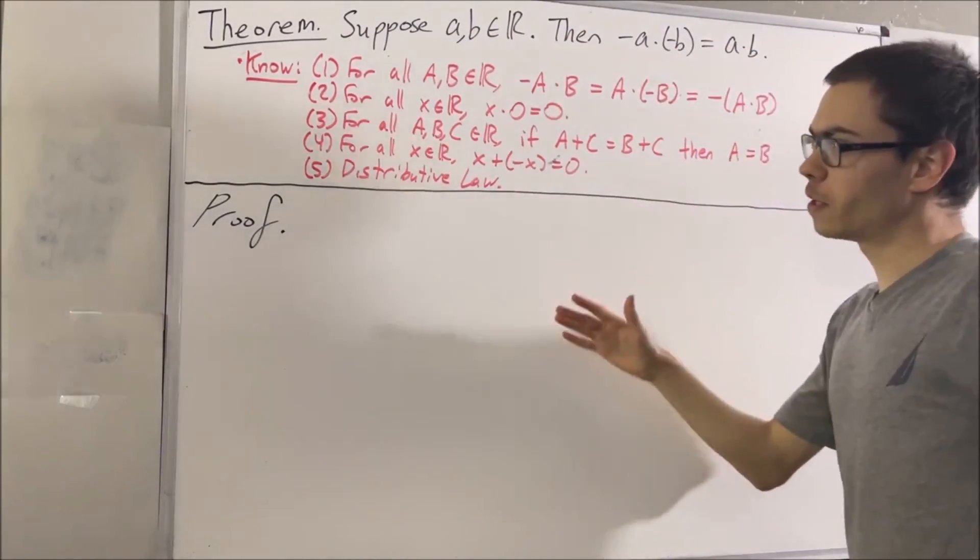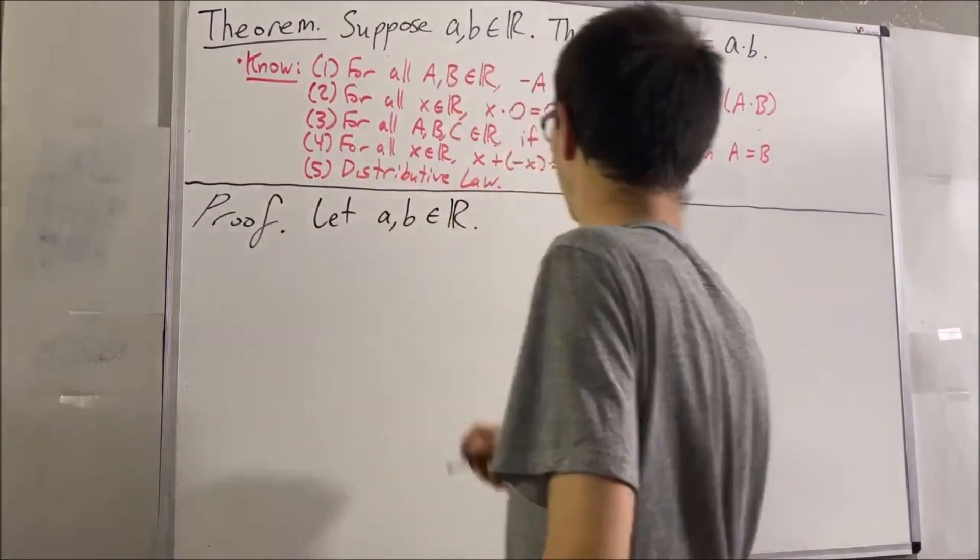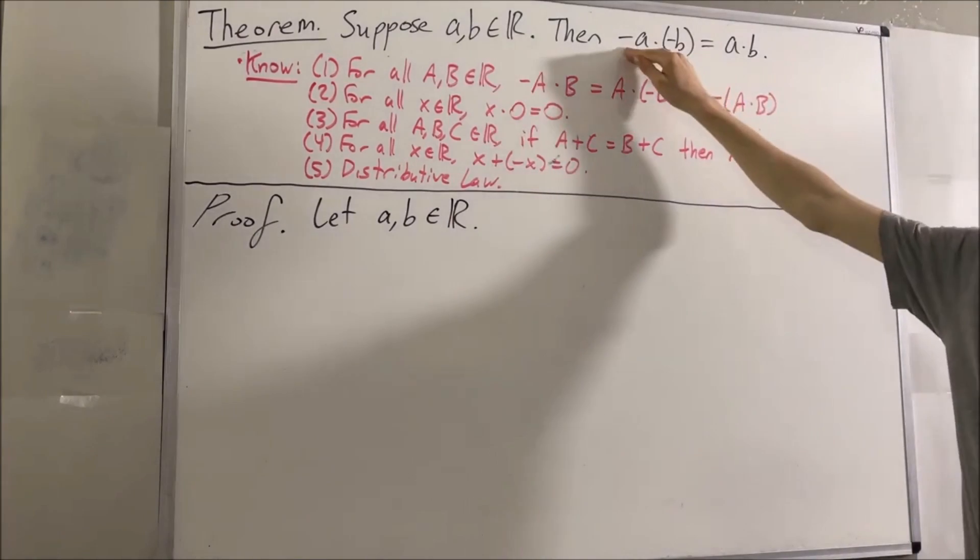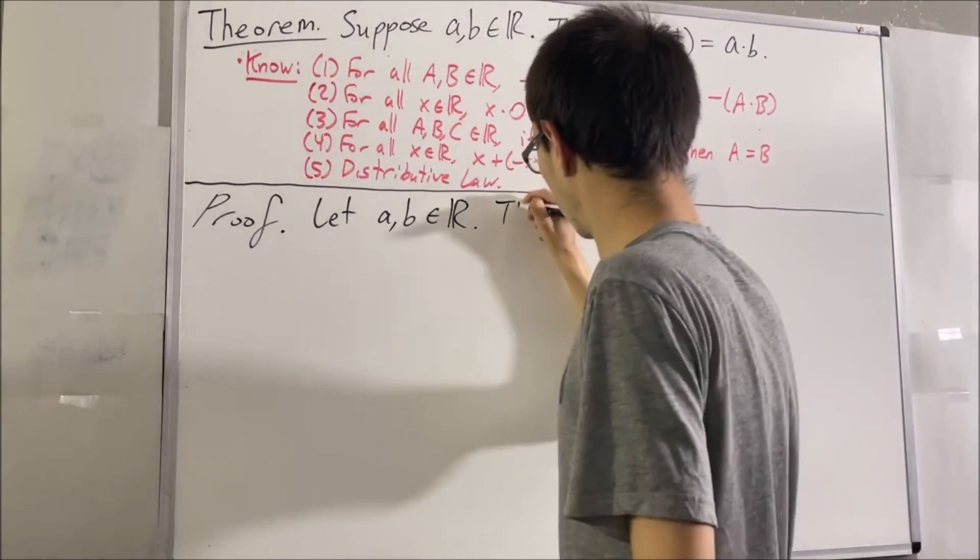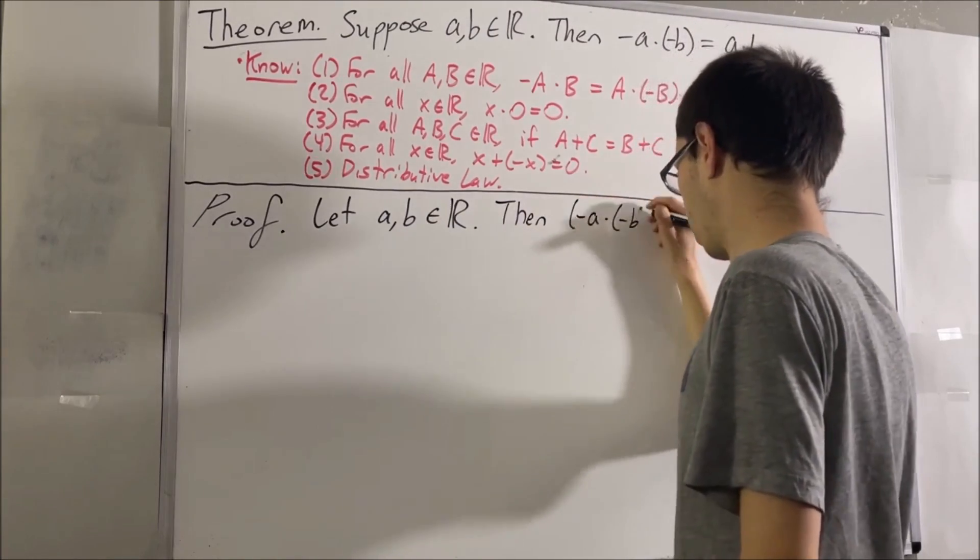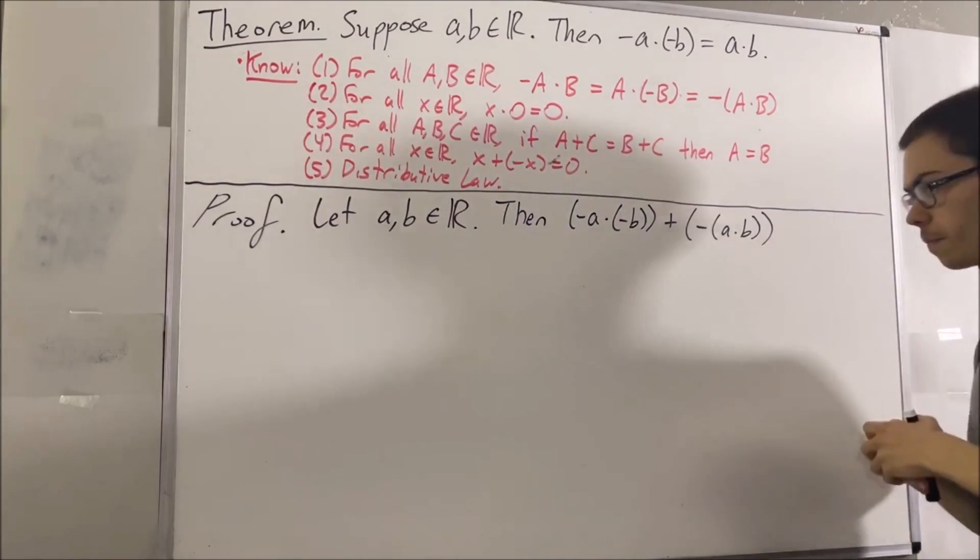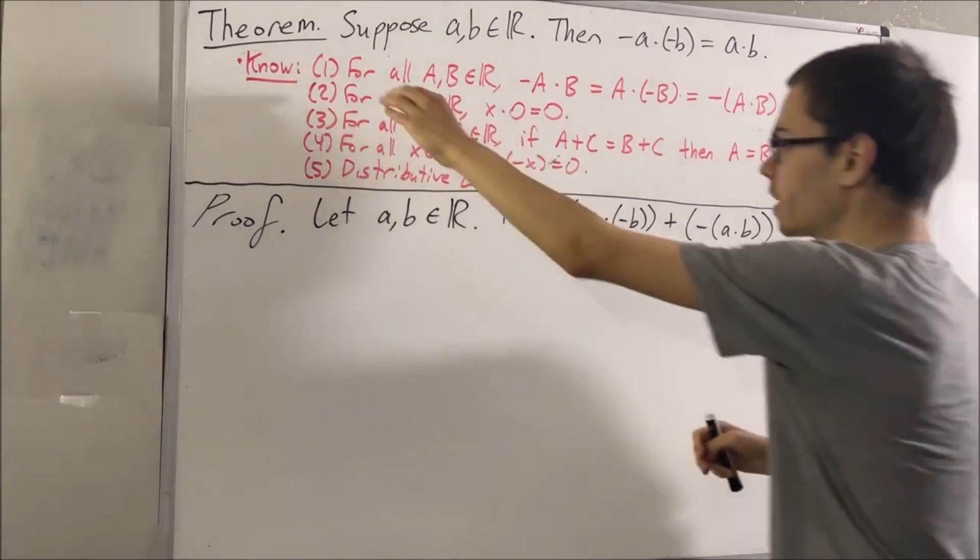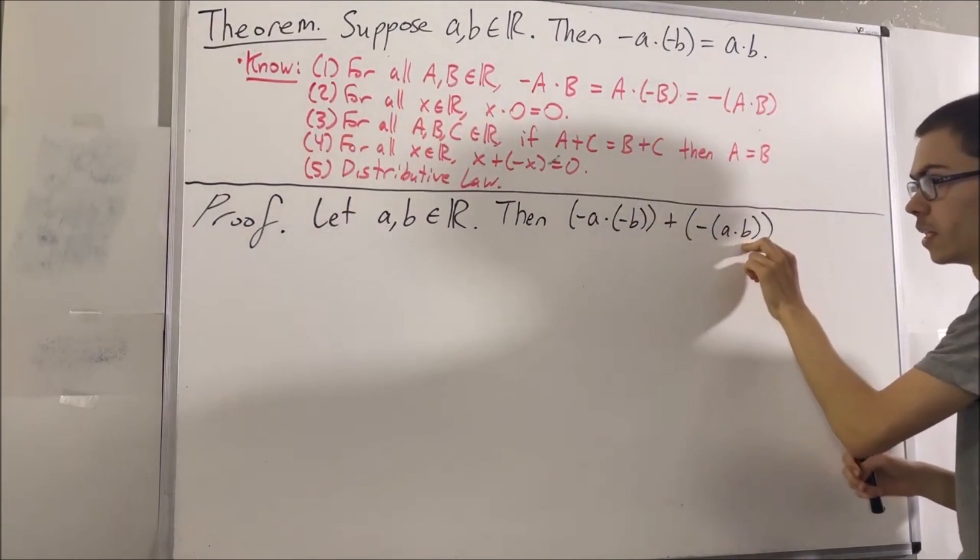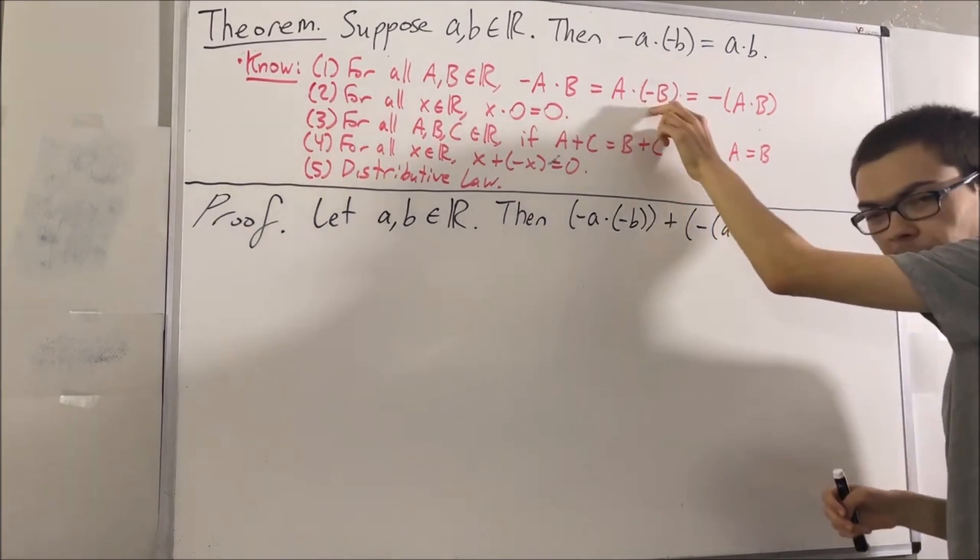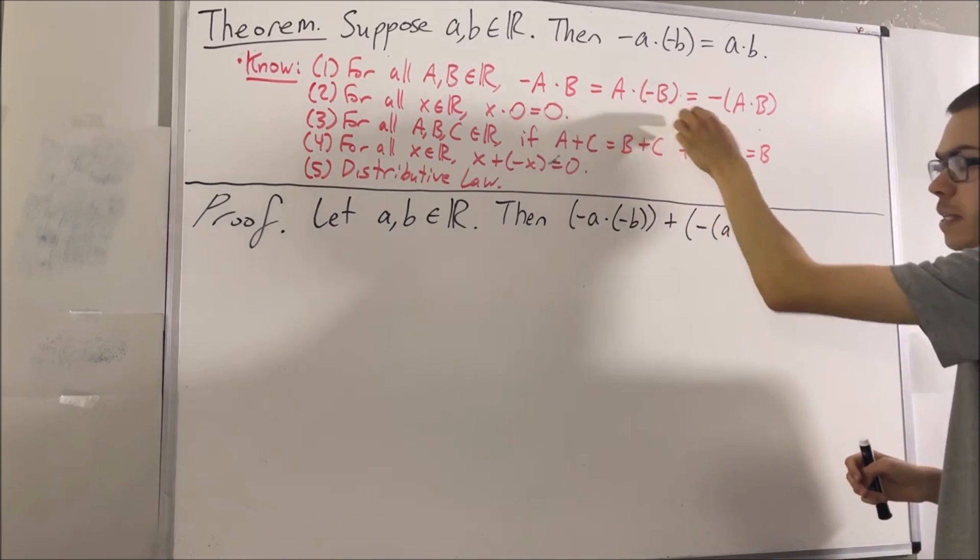To start out the proof, let's suppose A and B are real numbers. Our whole goal now is to prove that this is true. We're going to consider adding these two values together. Now, from fact number one, we know that the negative of A times B is equal to A times the negative of B. So we're going to replace the second parentheses with A times the negative of B.